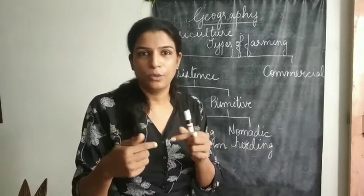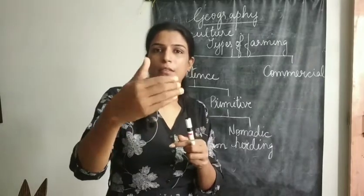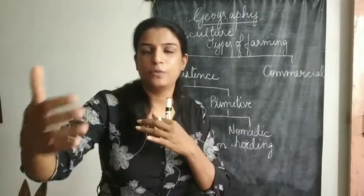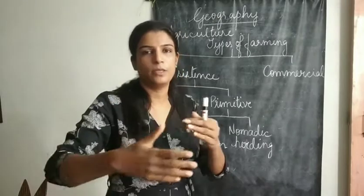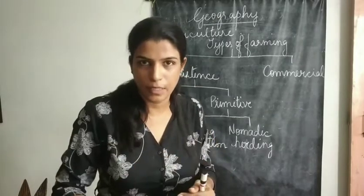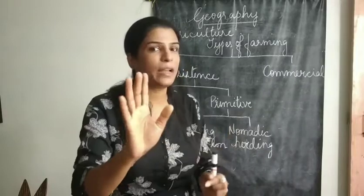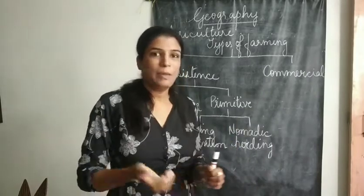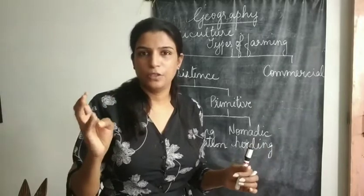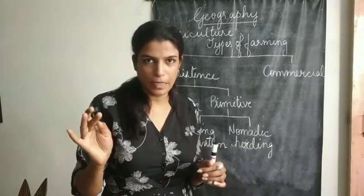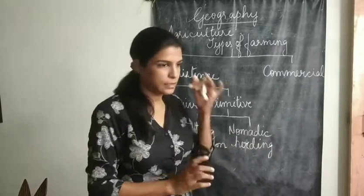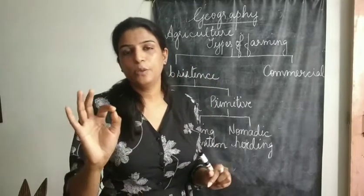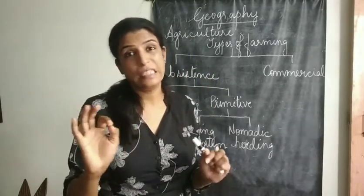The fertile soil allows them to grow multiple crops in a year — for 3-4 months they grow one crop, then another, then another, and that suffices their family needs. The main crops in this kind of cultivation are rice, wheat, maize, millets, and pulses.